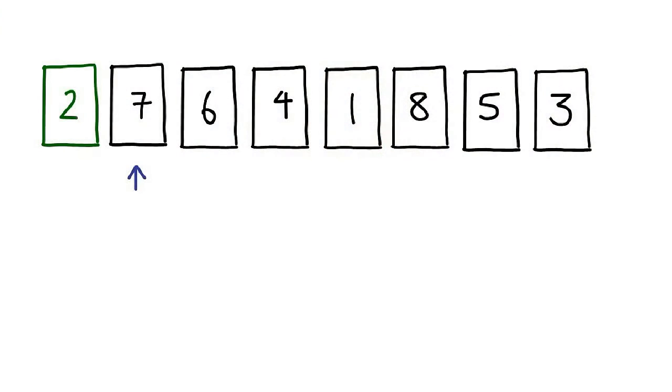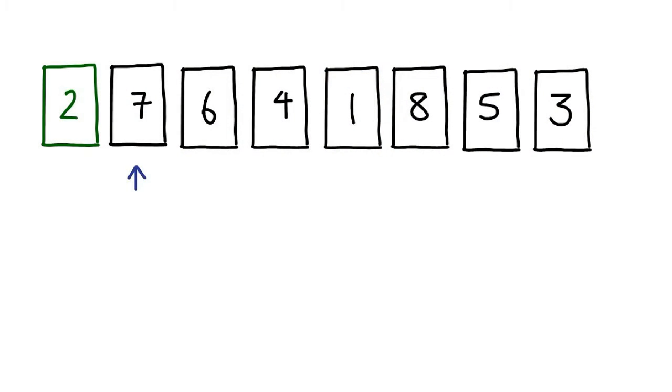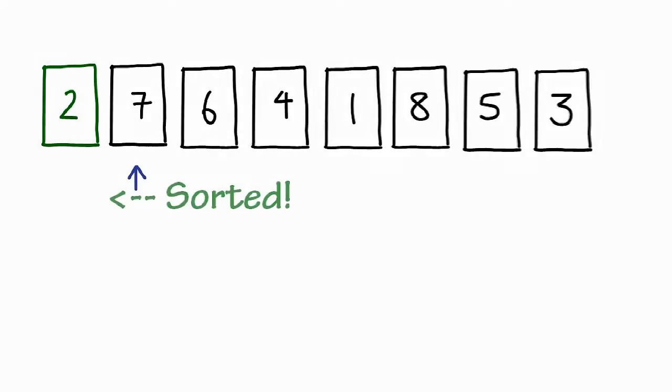Let's now take a look at how the sorting algorithm itself actually works. We'll start with our unsorted list. Similar to Bubble Sort, we're gonna stick an arrow at the bottom of the list to keep track of our progress. Something unique to Insertion Sort is that everything to the left of the arrow is actually sorted — meaning they are already in ascending order, though not necessarily in their final position.